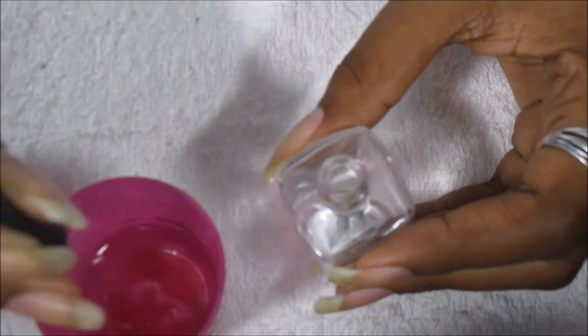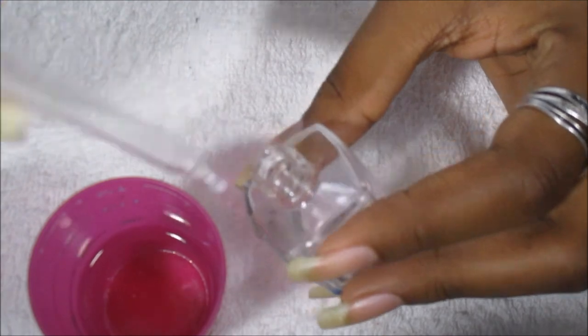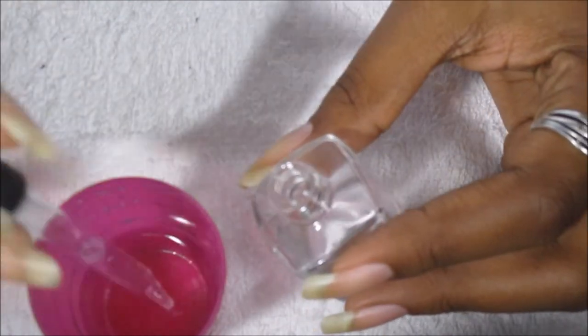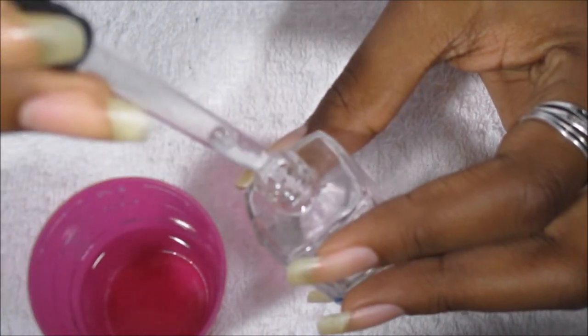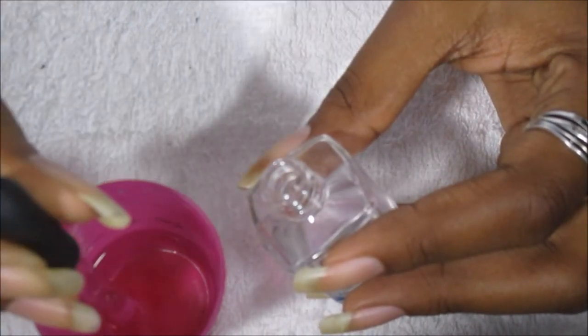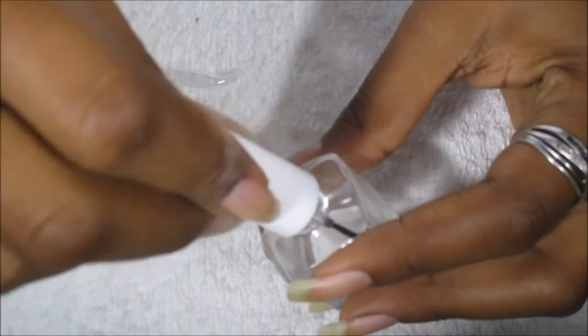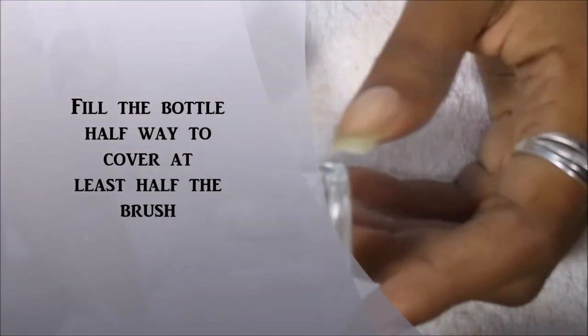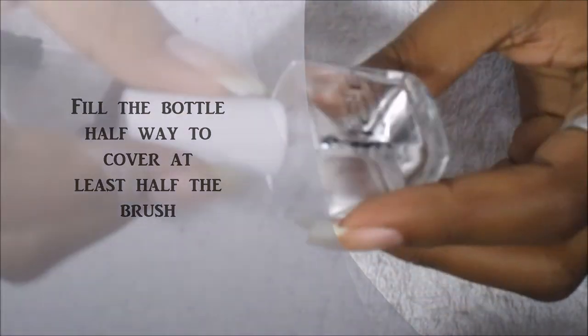And then once the bottle is clean, I just put some more acetone in here to keep the brush from getting stiff. Because if you just put the brush back in here with nothing in the bottle, it'll get stiff and it'll be pointless to save the bottle because you can't use the brush.